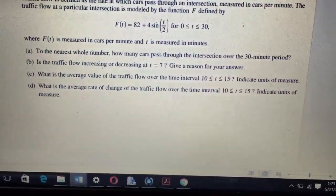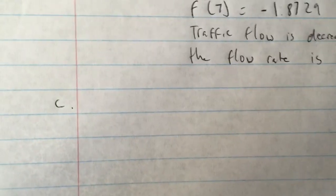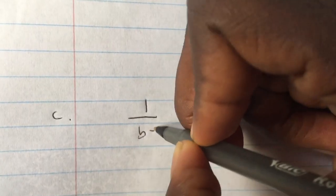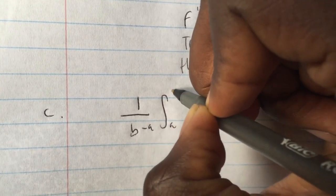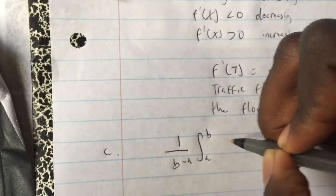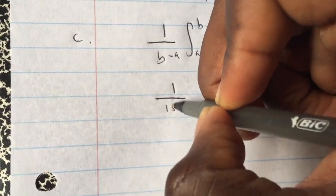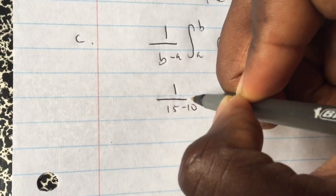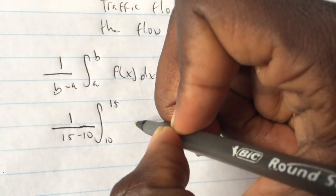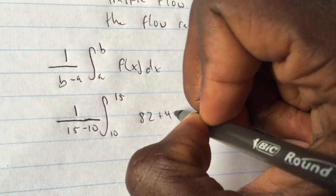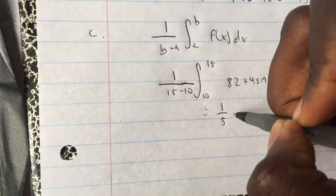The third part is C: what is the average value of the traffic flow over the time interval 10 to 15? Indicate units of measure. The formula for average value is 1 over (b minus a) times the integral from a to b of f(x). The interval is 10 to 15, so we do 1 over (15 minus 10) times the integral from 10 to 15 of 82 plus 4 sine(t/2).